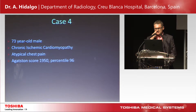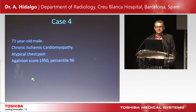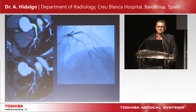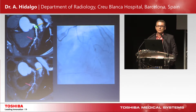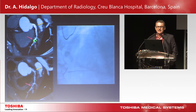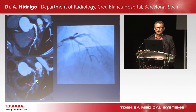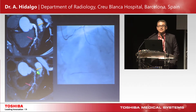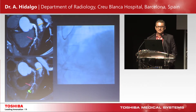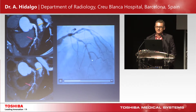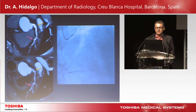This case, seen just two weeks ago, was a patient with chronic ischemic cardiomyopathy and atypical chest pain. The Agatston score was very high at 1,950 — at the 96th percentile. Without subtraction, it is hard to evaluate the left main trunk and the distal part of the LAD. With the subtraction technique, you can clearly see there is no lesion at the left main trunk, while there is a significant lesion in the distal part of the LAD — confirmed by invasive angiography.